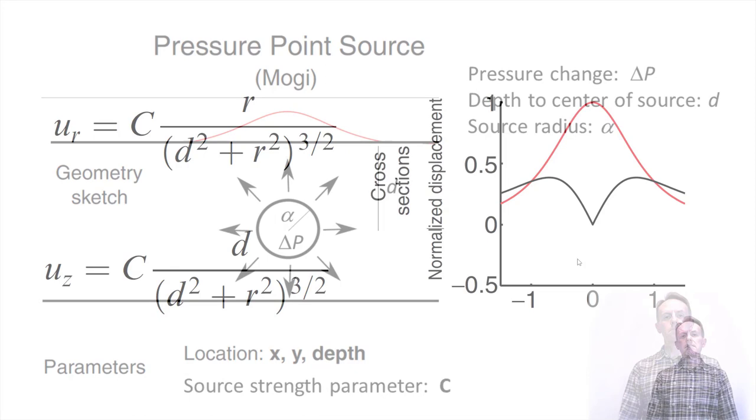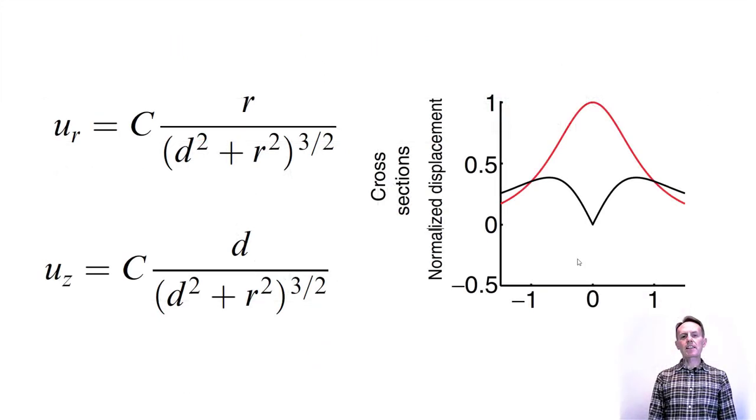This model results in a relatively simple surface deformation field that is radially symmetric. It is thus convenient to express the deformation in a coordinate system with a center in the same horizontal location as the surface projection of the source. You can then use a coordinate system where the horizontal distance from the source is on a horizontal axis that we refer to as r. The model predicts both horizontal displacement in the radial direction, directly away from the surface projection of the source center, and vertical displacement, as shown with the equations and graphs in this figure.